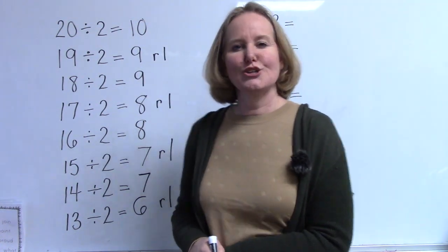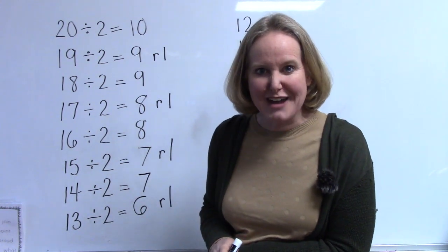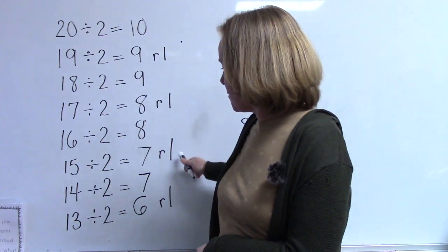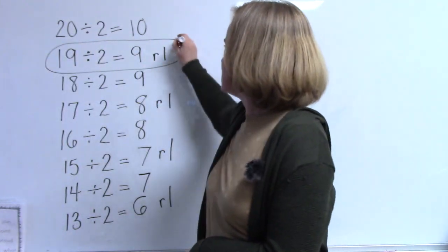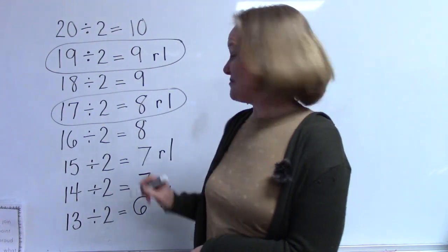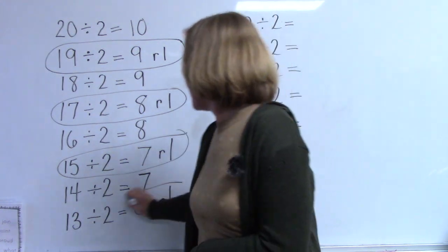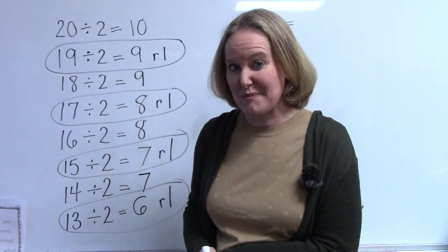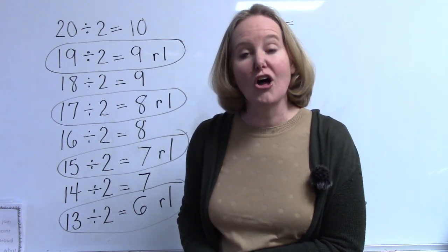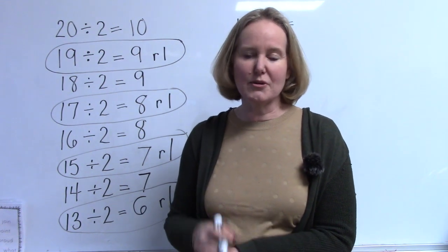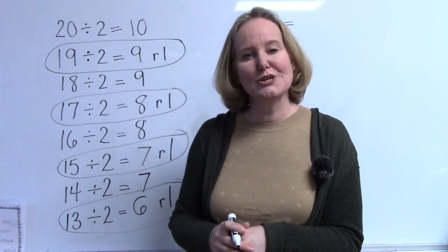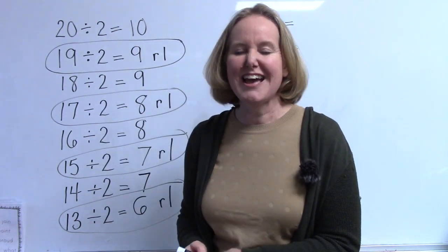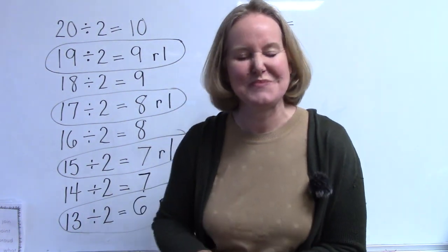I'd like for us to take a look at this. I bet that you noticed something. Do you see a pattern? Do you see that every other one has a remainder? Let's look at those — nineteen divided by two, seventeen divided by two, fifteen divided by two, and thirteen divided by two. What do all of these numbers have in common? Did you say that they're all odd numbers? You would be right. An odd number cannot be divided evenly by the number two. Twenty, eighteen, sixteen, and fourteen are all even numbers, and we can evenly divide them by two. Good noticing.